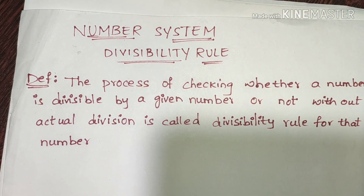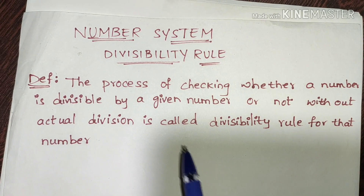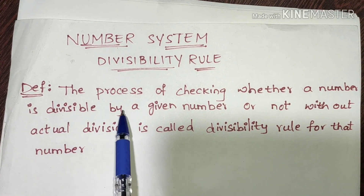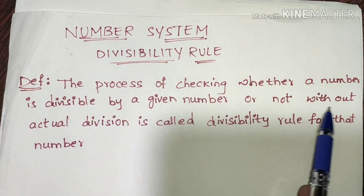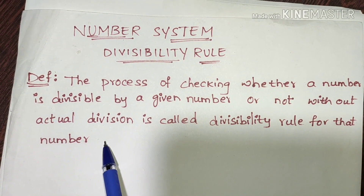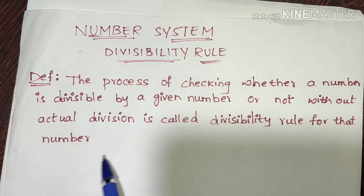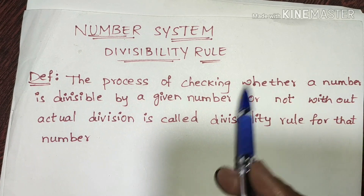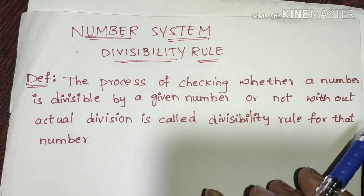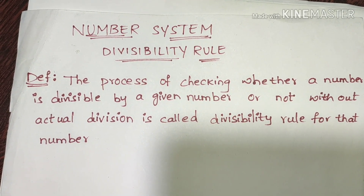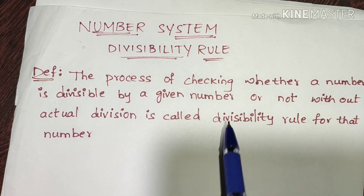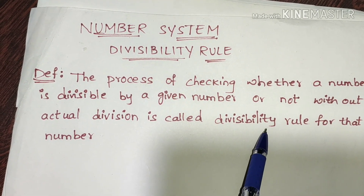The first topic is the definition of divisibility rules. The process of checking whether a number is divisible by a given number or not, without actual division, is called the divisibility rule for that number.